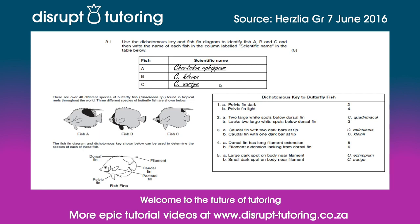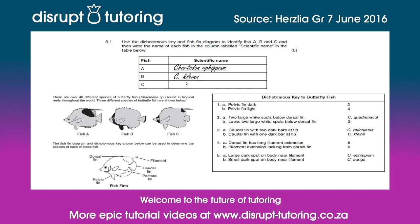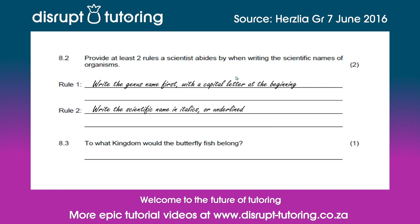Now let's have a look at the next part of the question. 8.2 says: provide at least two rules a scientist abides by when writing the scientific names of organisms. One rule is that you must write the genus name first with a capital letter at the beginning — for example, Chaetodon ephippium, where Chaetodon is the genus name with a capital letter. Another rule is that you write the scientific name in italics or underlined. Italics work better when typing; for handwritten work you would underline the scientific name.